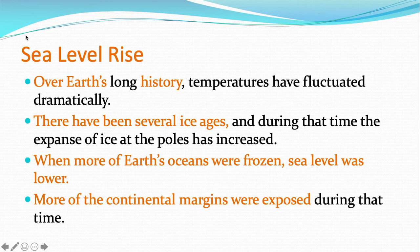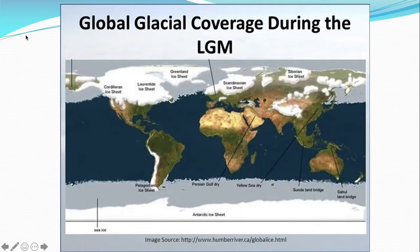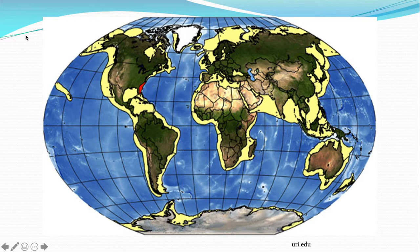One other thing to talk about in this unit is sea level rise. You may have heard of this in science class before. When we talk about global climate change, we talk about sea level rise. But over Earth's long history, temperatures have fluctuated quite a bit. There have been several ice ages, and during that time the expanse of ice at the poles increases. When more of Earth's oceans are frozen, sea level is lower, and so more of the continental margins were exposed. During the most recent ice age, the polar ice caps stretched down to almost Virginia, and the South Pole's ice extended to touch the tip of South America. So much more ice means that the liquid water level is lower, and more of the continental shelf would be exposed during that time.